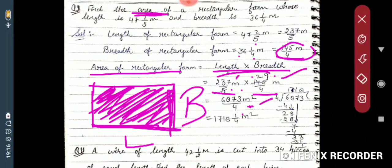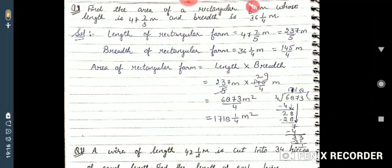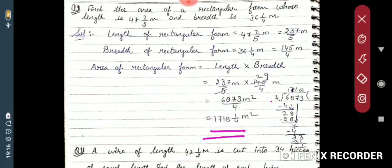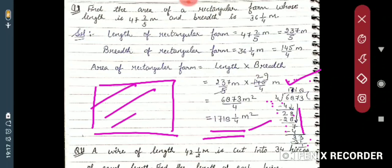Now convert 6873/20 into a mixed fraction by dividing. Dividing 6873 by 20: 20 goes into 68 three times giving 60, remainder 8; bring down 7 to get 87, 20 fours are 80, remainder 7; bring down 3 to get 73, 20 threes are 60, remainder 13... The result is 1718 and 1/4 meter square.